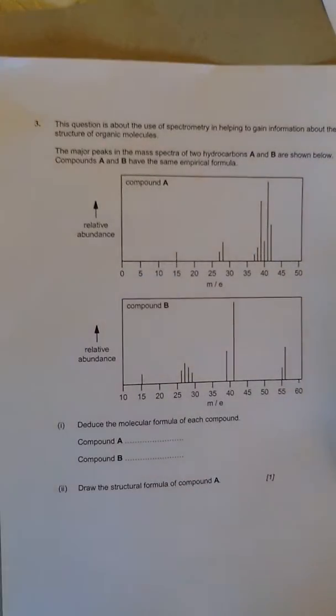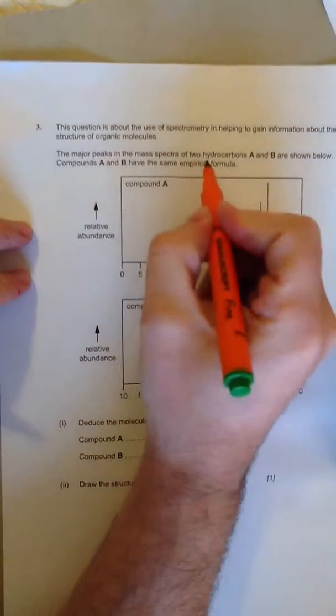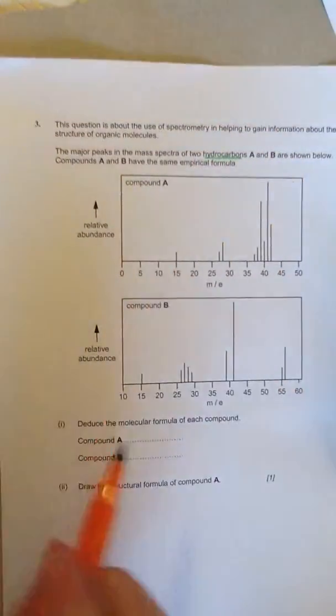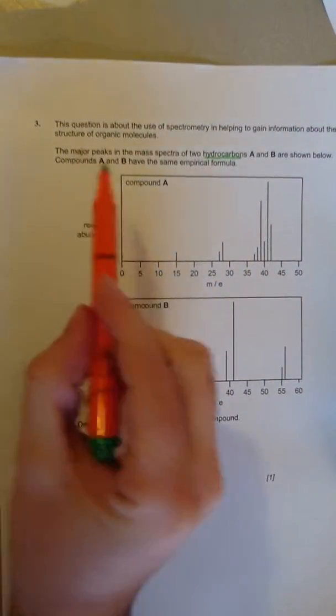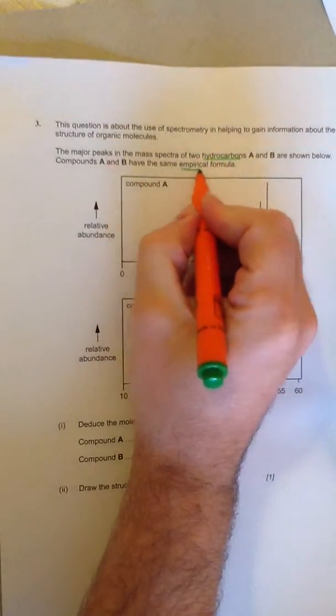So this is a mass spec question. It says the major peaks in the mass spectrum of two hydrocarbons, I'm going to underline that because it's important, are shown below. Compounds A and B have the same empirical formula.